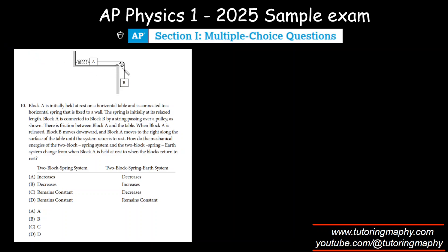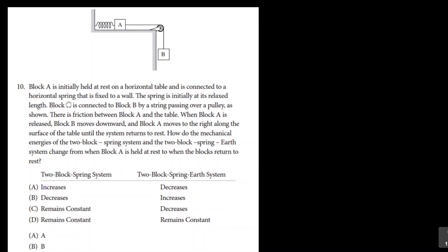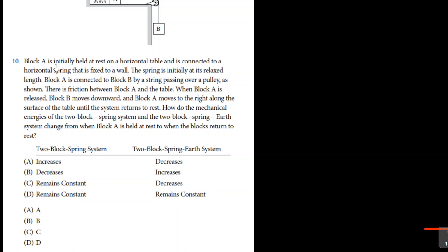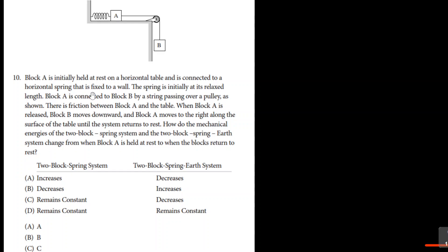Right, there is an Atwood machine, modified Atwood rather, and there is a spring over here. I'm just gonna zoom in so that we can see this. Okay, now Block A is initially held at rest on a horizontal table and is connected to a horizontal spring that is fixed to a wall. The spring is initially in its relaxed length.